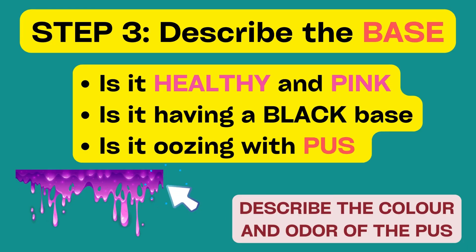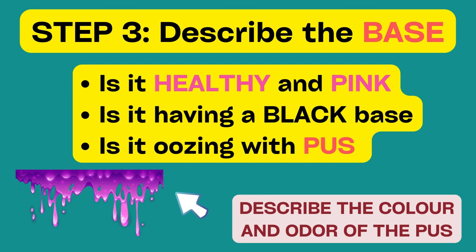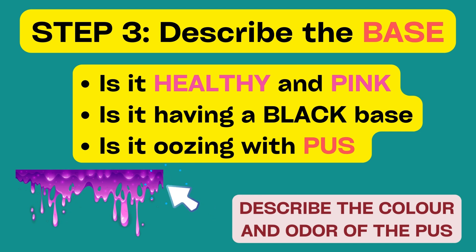The next thing to comment on is about the base. Is the base clean and healthy — that is a healthy pink color — or is the base necrotic, that is black, or is it oozing with pus? If there is pus, you must comment about it a bit. Color and odor will do when commenting about pus. For example: the ulcer has a necrotic base.